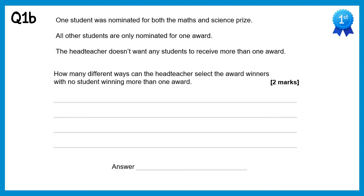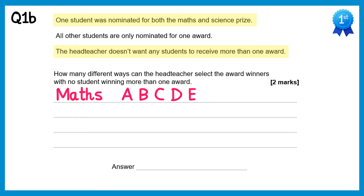Part B of this question is a little bit more complicated though. We're told that one student is nominated for both maths and science, but importantly the head teacher doesn't want any students to receive more than one award, so this student can't receive maths and science. The easiest way to approach this one is to write out each subject and label the students with letters. So for maths we have five nominees, let's call them A, B,